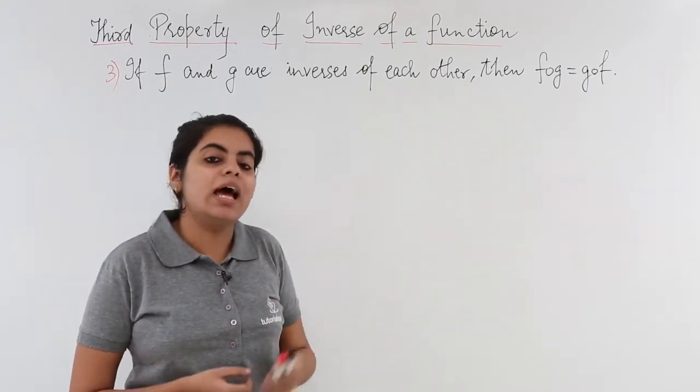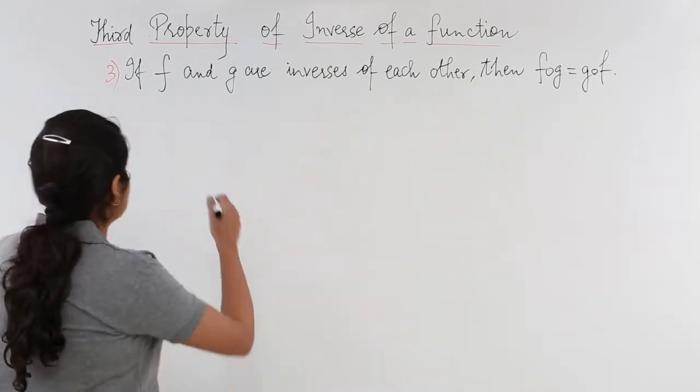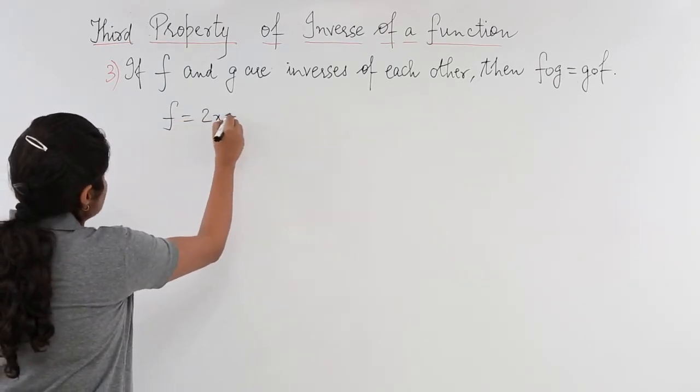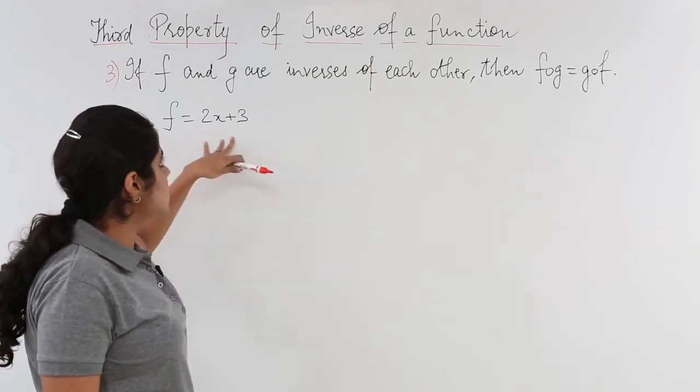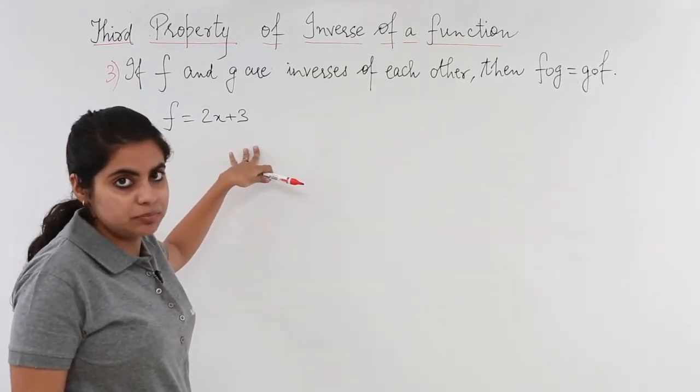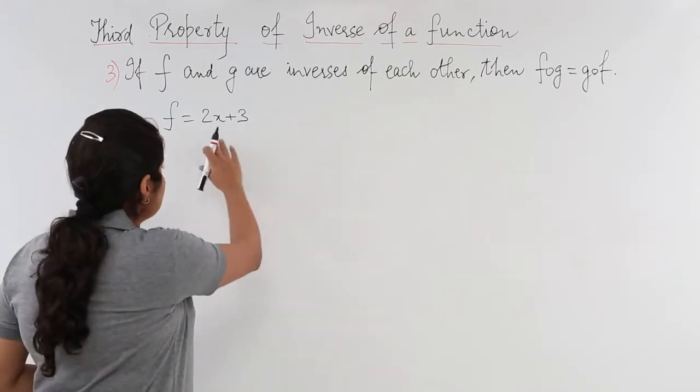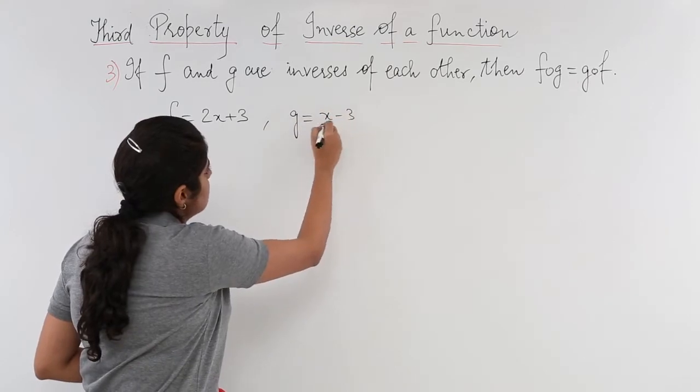Let's see an example and the proof of this. So I have a function f and the inverse of this function is g. f and g are inverses, that is given to me. f is 2x plus 3 and g is x minus 3 by 2. This g is computed in the same manner as we find the inverses.